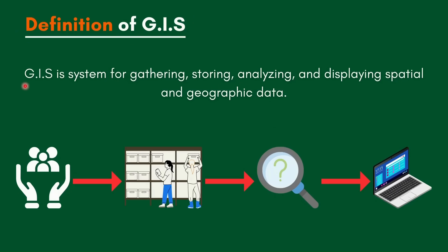So what is the accepted definition for GIS? GIS is a system for gathering, storing, analyzing, and displaying spatial and geographic data.